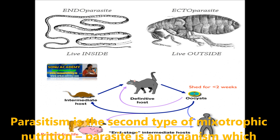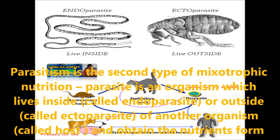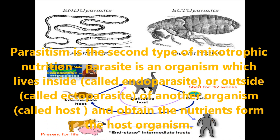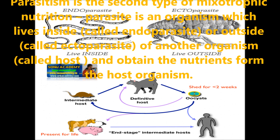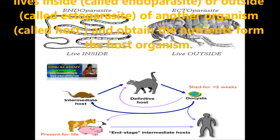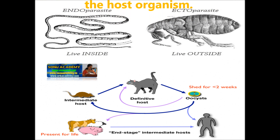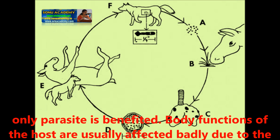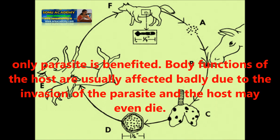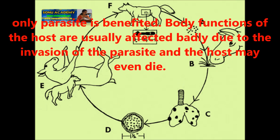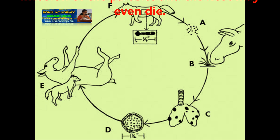Parasitism is the second type of mixotrophic nutrition. The parasite is an organism which lives inside — called an endoparasite — or outside — called an exoparasite — of another organism called the host. Nutrients are obtained from the host organism. In this mode of nutrition, only the parasite is benefited. The body functions of the host are badly affected due to the invasion of the parasite, and the host may even die.